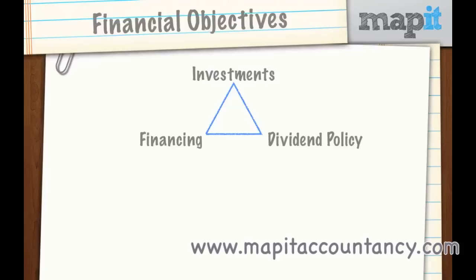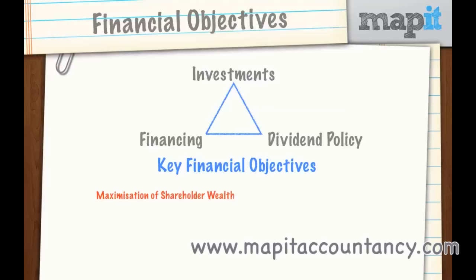We're thinking about what the objectives are when considering that interlinkage and how the finance manager should run the business. The key financial objective will be the maximisation of shareholder wealth. If I could sum up this course in one sentence, that would be it — maximisation of shareholder wealth. That should be in the back of your mind when answering every single exam question, because that is what the finance manager is there for.